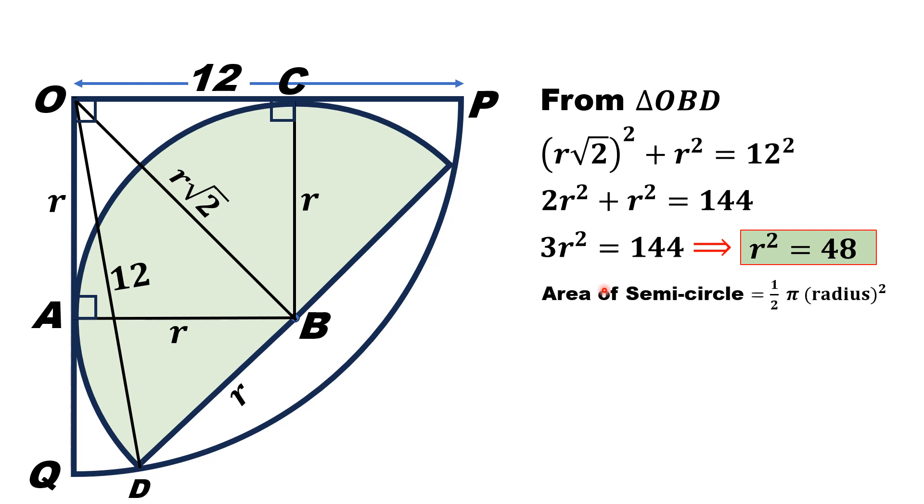Now we know that area of semicircle is equal to half of the area of a circle, and area of circle is equal to π times radius squared. So r² is given as 48, we are going to substitute this value over here. So area of semicircle is equal to half times π into 48, and that will give 24π, which is the answer. Thank you for watching.